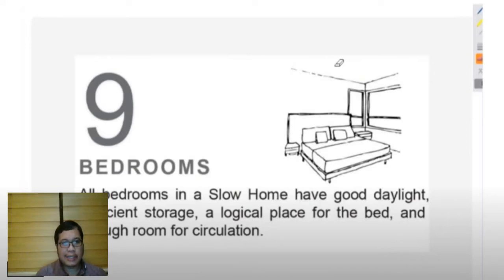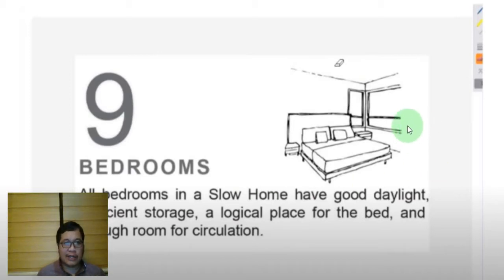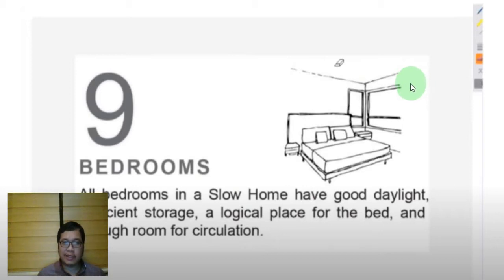All bedrooms in a slow home should have good daylight, sufficient storage, a logical space for the bed, and enough room for circulation. When you design your bedrooms, it is important that you make sure your bedroom has enough natural lighting coming in.